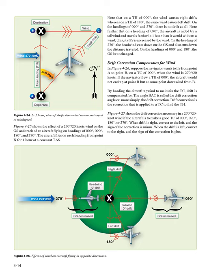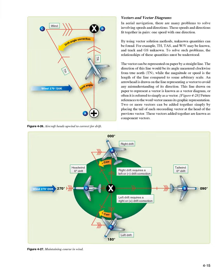When drift is right, correct to the left, and the sign of the correction is minus. When drift is left, correct to the right, and the sign of the correction is plus. Vectors and vector diagrams: in aerial navigation, there are many problems to solve involving speeds and directions. These speeds and directions fit together in pairs — one speed with one direction. By using vector solution methods, unknown quantities such as track and GS can be found when TH, TAS, and wind vector are known.